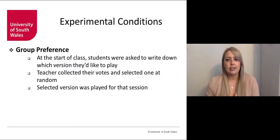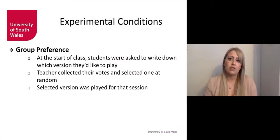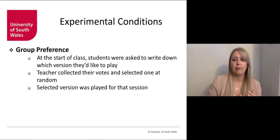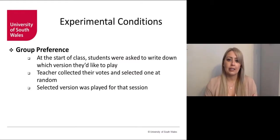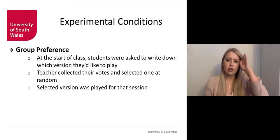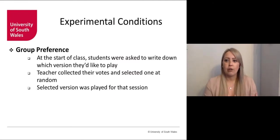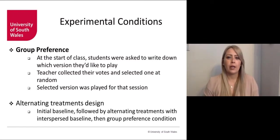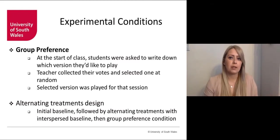We ended with a group preference condition. At the start of every session, students were asked to write down which version of the game they wanted to play — the individual game or the team game. The teacher collected their votes and selected one at random, and whichever version was selected would be played that session. The research design was an alternating treatments design, with an initial baseline, a phase of alternating treatments with an interspersed baseline, and then the group preference condition.